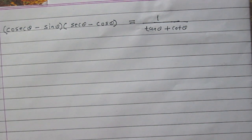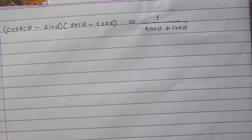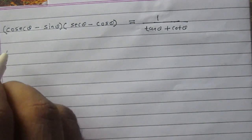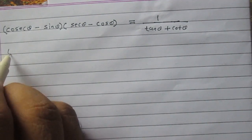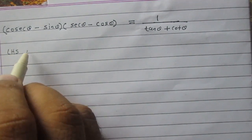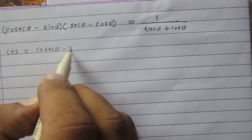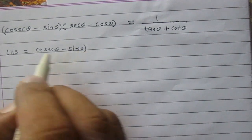Cosec θ minus sin θ, in multiplication with sec θ minus cos θ, is equal to 1 divided by the sum of tan θ and cot θ. Let us consider the left-hand side of this identity: cosec θ minus sin θ, in multiplication with sec θ minus cos θ.